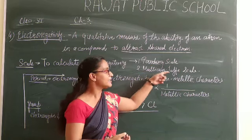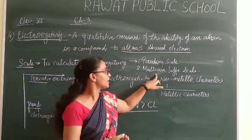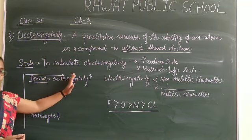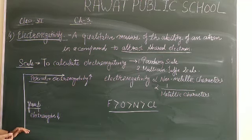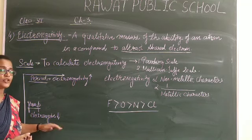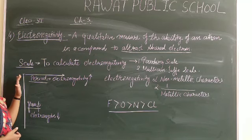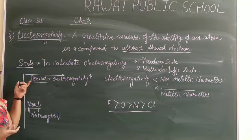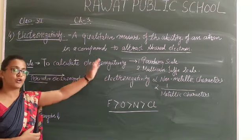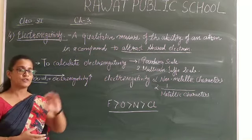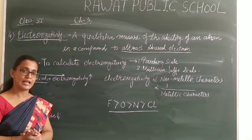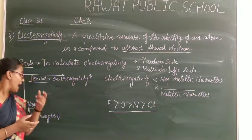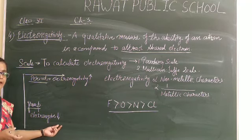Out of these, the Pauling scale is the most commonly used. When we move across a period from left to right in the periodic table, electronegativity increases. For example, comparing the second period elements — lithium, boron, carbon, nitrogen, oxygen — as we move left to right, electronegativity increases, meaning oxygen has higher electronegativity than nitrogen, and nitrogen higher than carbon. When we move down a group, electronegativity decreases.